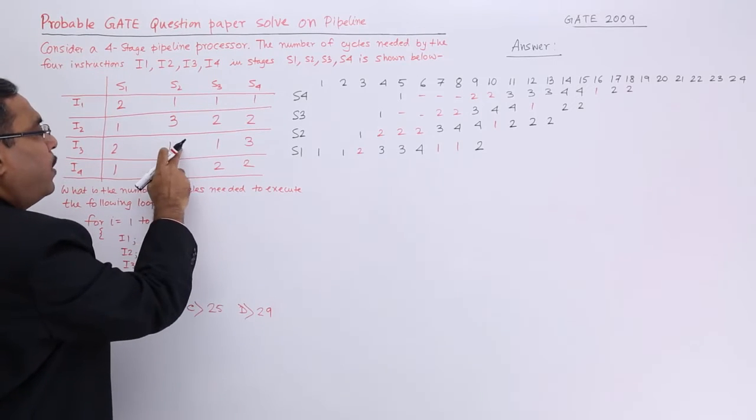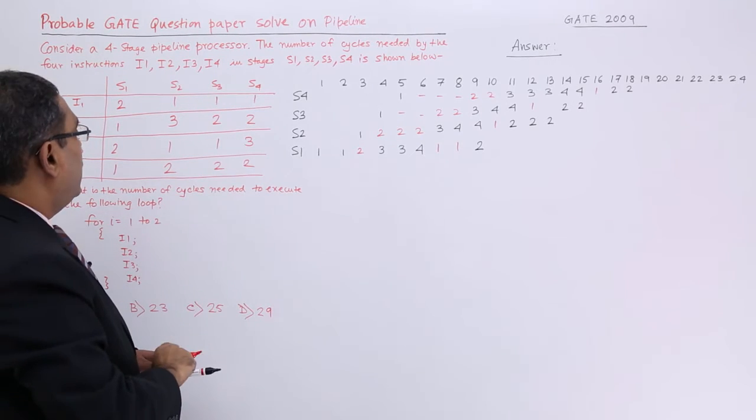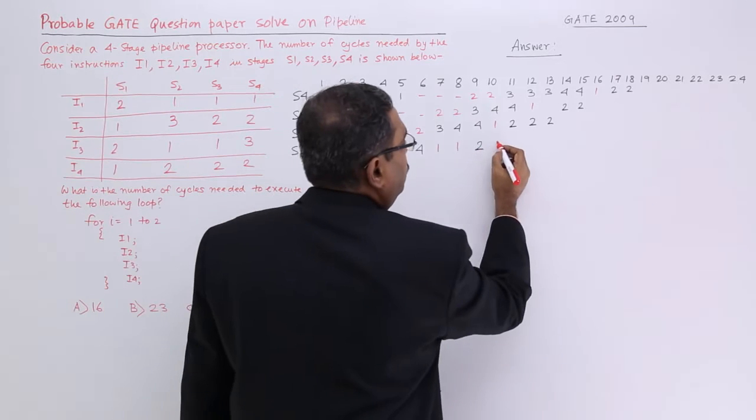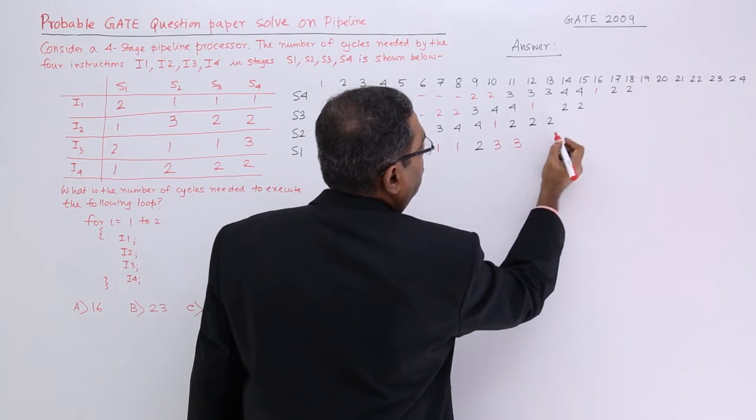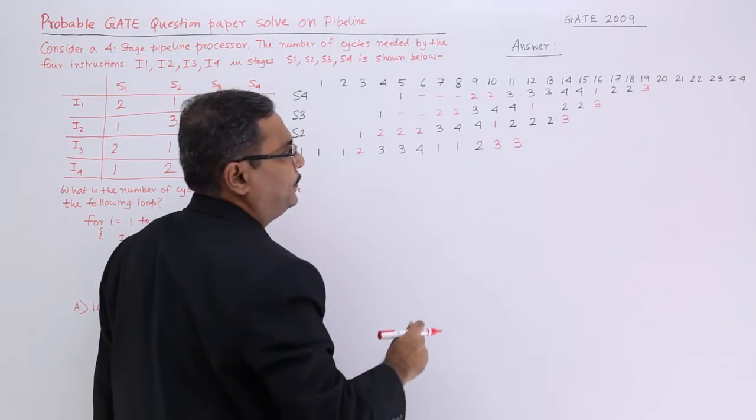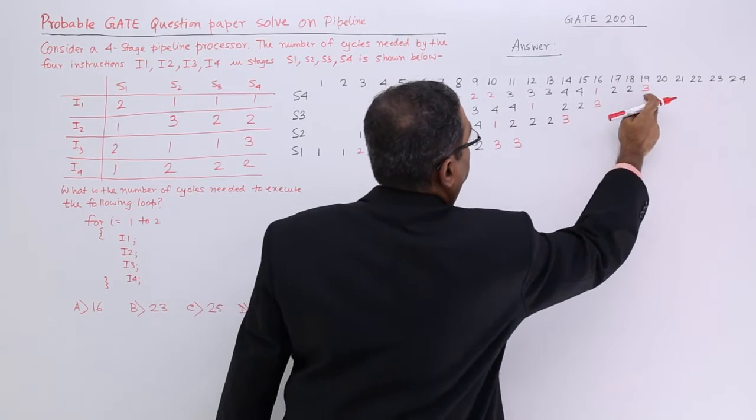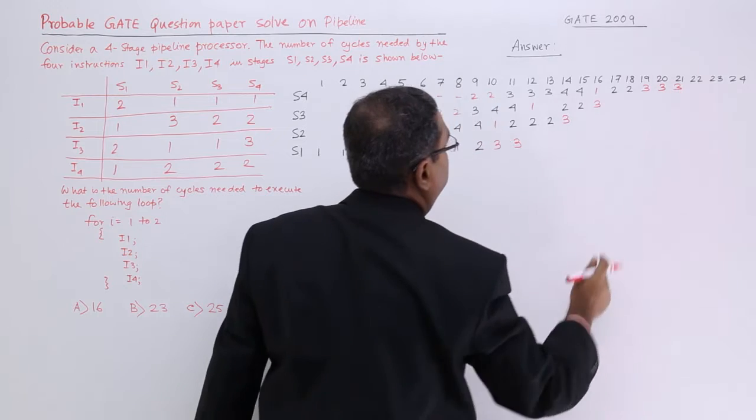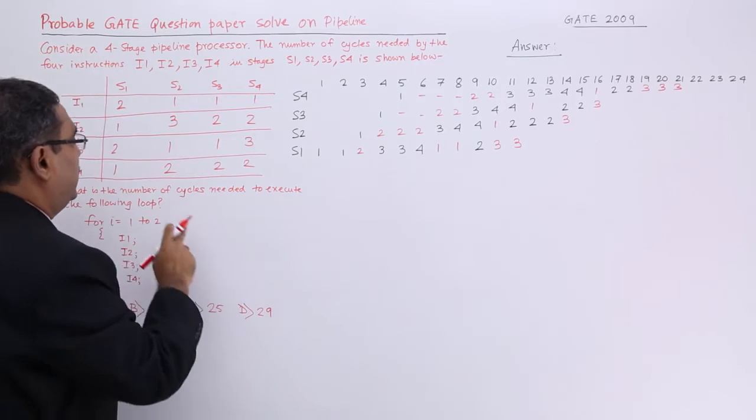Next one: 2, 1, 1, 3. Next one: 2, 1, 1, 3. So 2, 1, 1, 3. Then 2, 1, 1, 3.